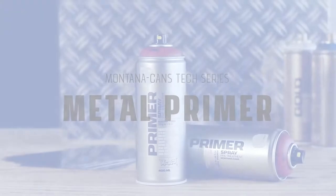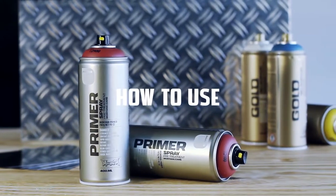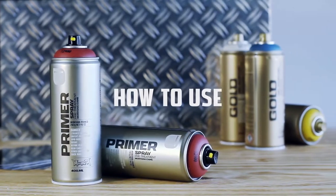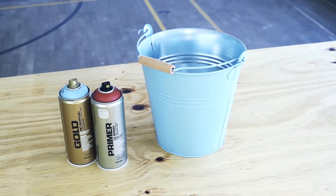The Montana Metal Primer is a quick drying primer for the perfect pre-treatment of metal surfaces that need to be protected from rust. It also creates greater adhesion for all paints and coatings applied thereafter.